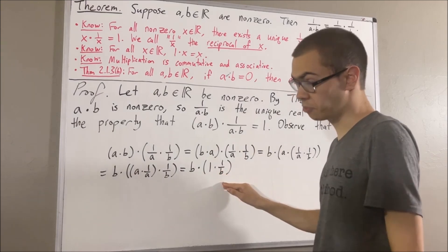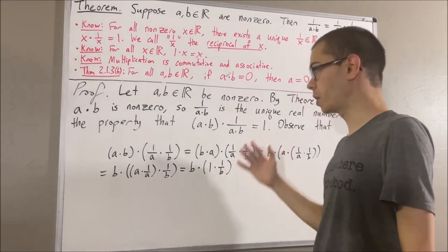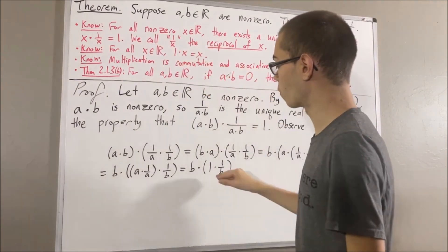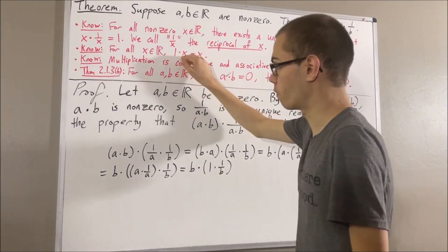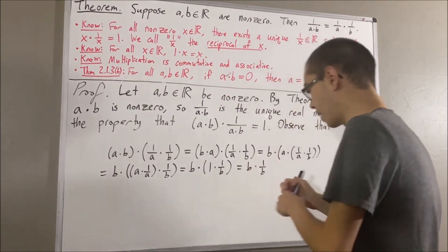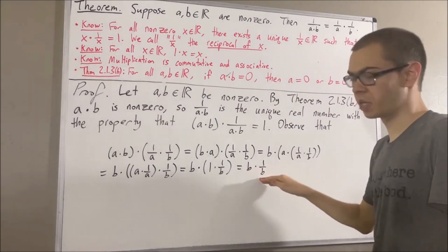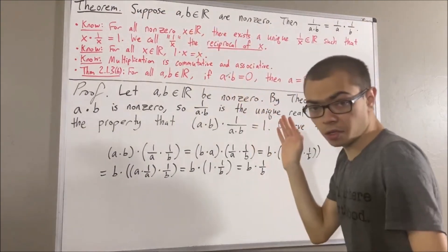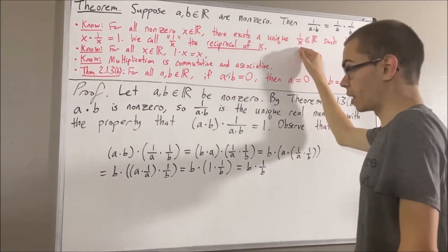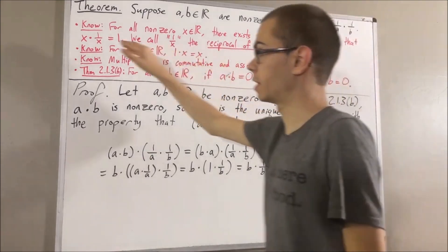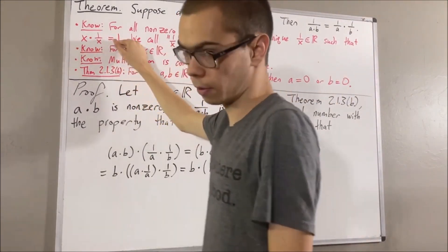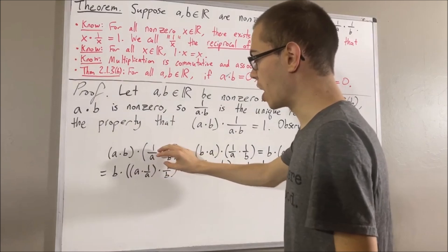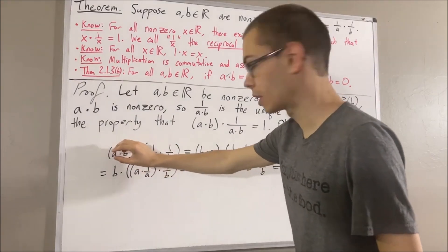Next, we expect 1 times 1 over b to equal 1 over b, which we can verify by our second field property: taking x to be 1 over b, 1 times 1 over b is equal to 1 over b. Then at this point, we expect b times 1 over b to equal 1. By our first field property, taking x to be b, 1 over b is the unique real number with the property that b times 1 over b is equal to 1. So we have shown that if we take 1 over a times 1 over b and multiply that by a times b, we get 1.